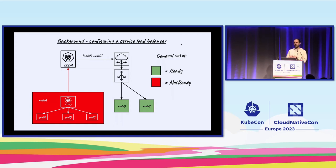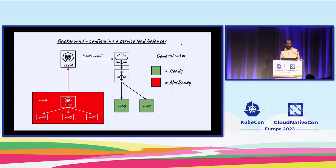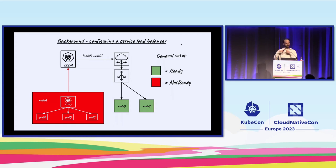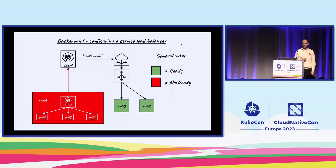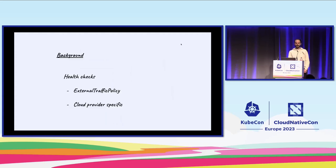An important aspect to note is that the node has a ready state that can flap between ready and not-ready. The KCCM watches nodes, so it reacts to these events, and whenever the node transitions to not-ready it will reconfigure the load balancer through an update call to the cloud provider API. What will remain are the nodes that are ready — so in this example, Node A goes not-ready and the load balancer is updated to keep only Node B and Node C.